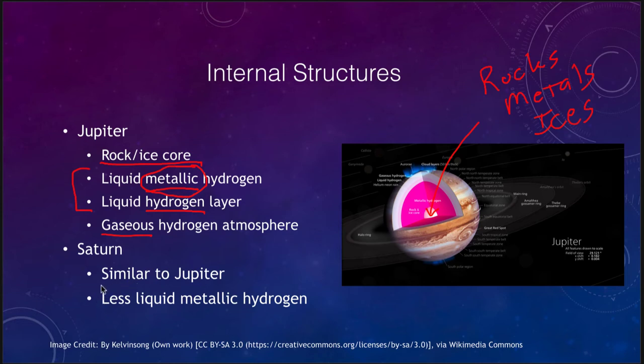Saturn is really just very similar to Jupiter, except it has less mass, which means less pressure and therefore less liquid metallic hydrogen forms. When we look at magnetic fields later on, we will see that this is one of the reasons Saturn has a less strong magnetic field than Jupiter.